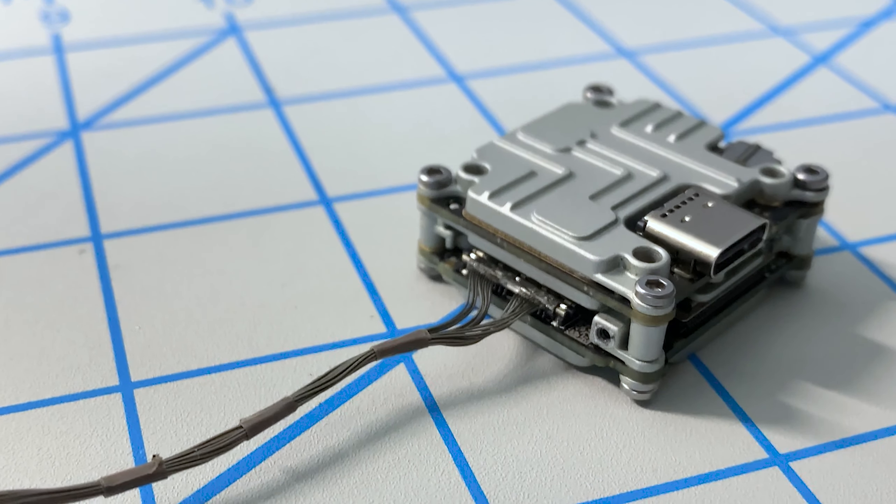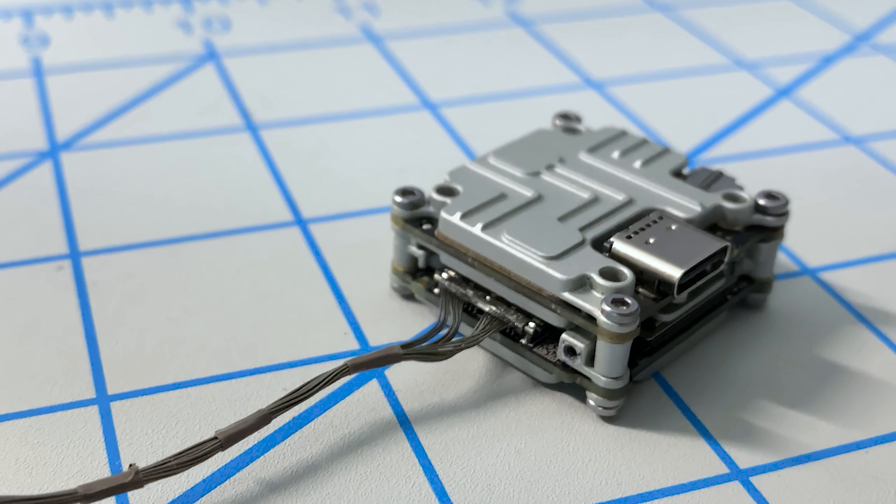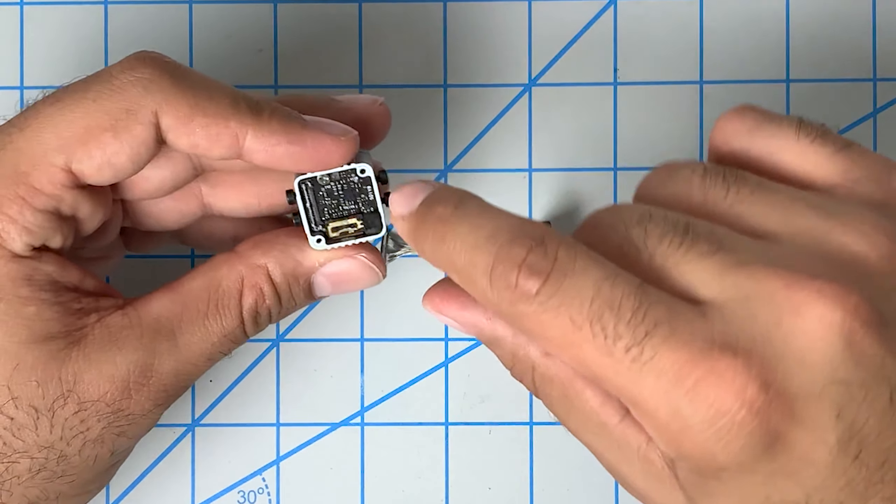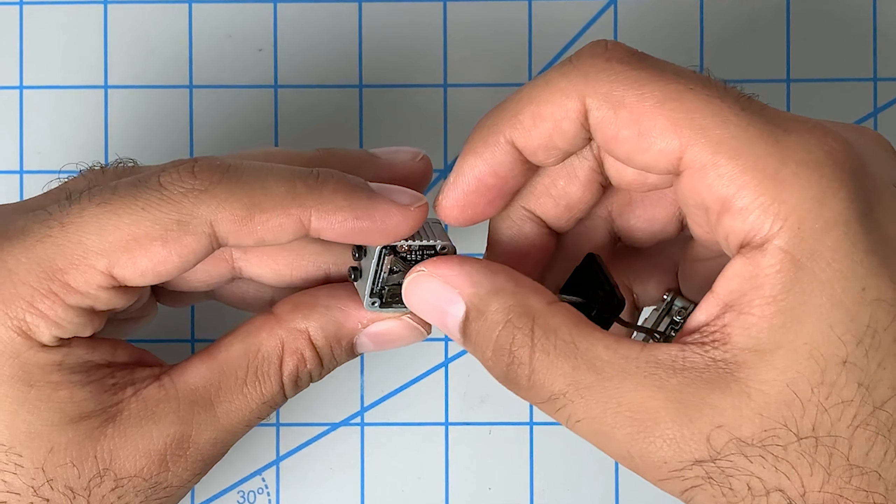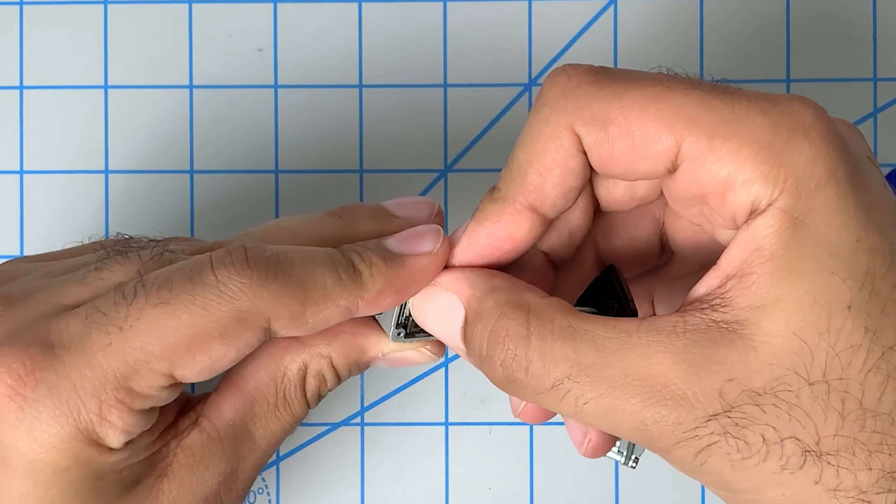And then we'll move on to the camera portion. And on the camera portion, again, you want this on the left side. We'll take this. We'll line it up. We'll push it in.